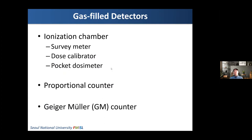There are several different types of gas-filled detectors. You are familiar with the ionization chamber, which includes the survey meter, dose calibrator, and pocket dosimeter. You may also be familiar with the proportional counter and Geiger-Müller counter — the GM counter is also one of the gas-filled detectors.